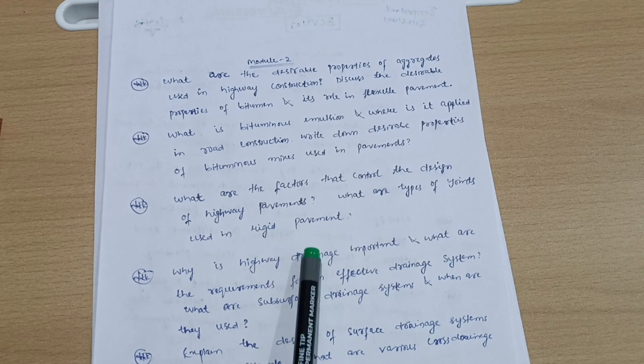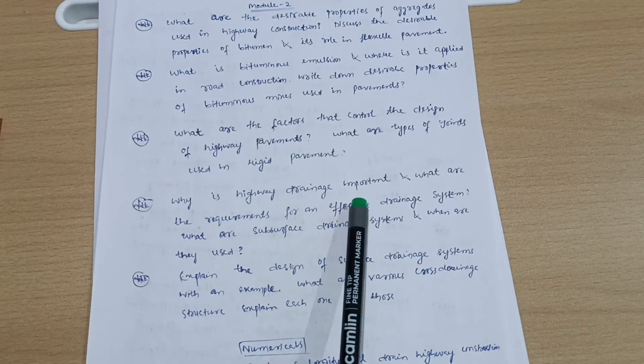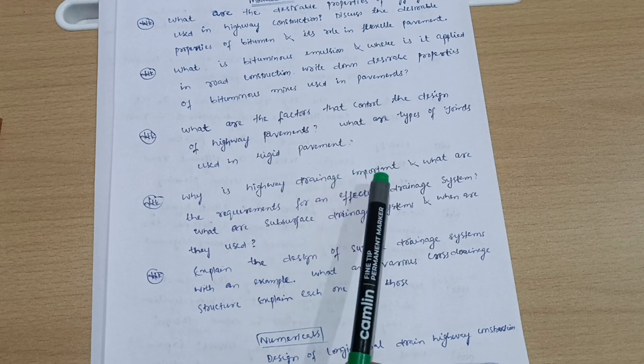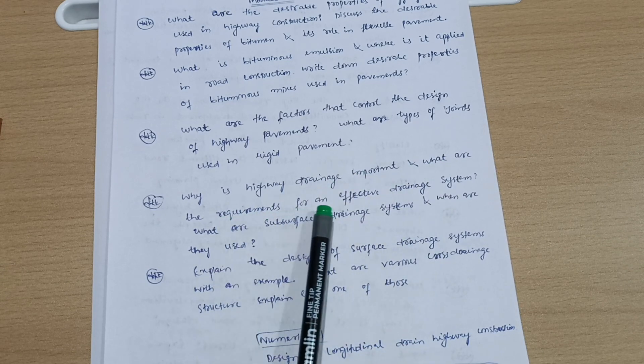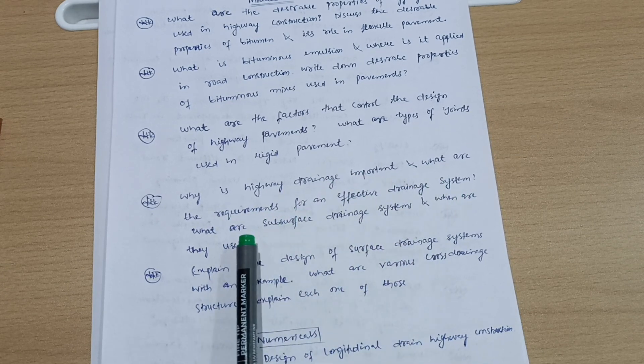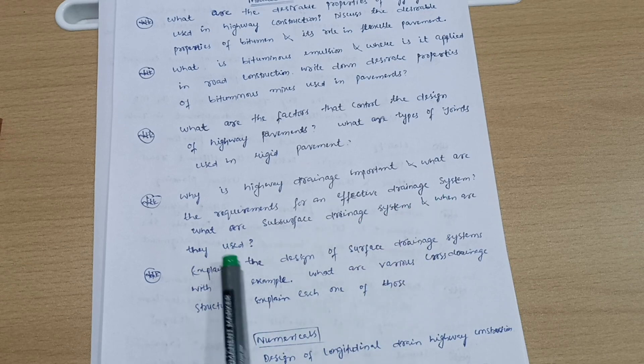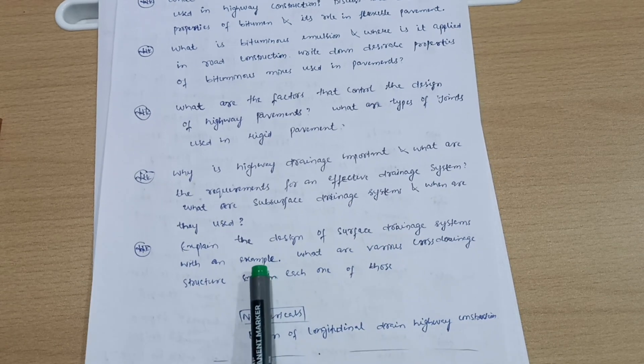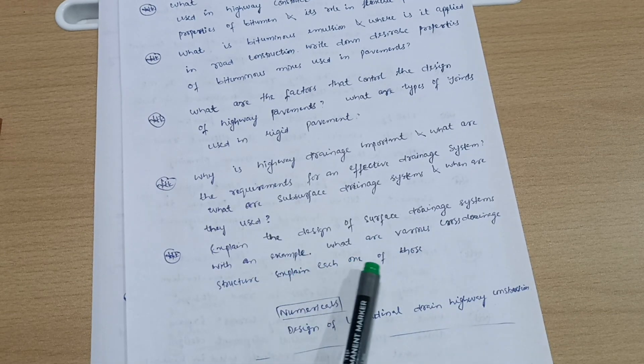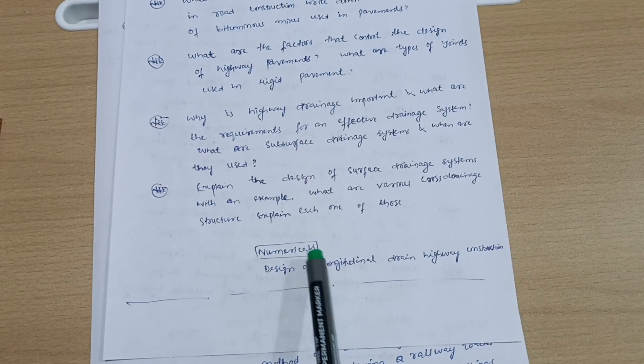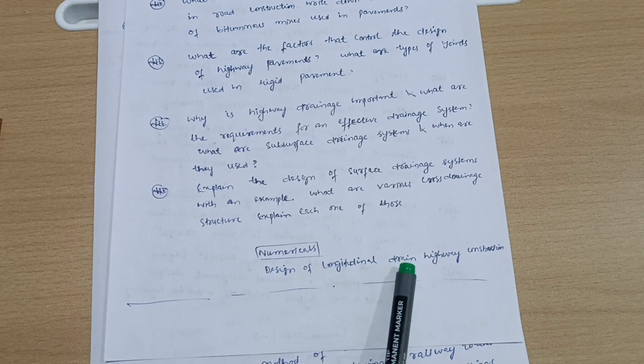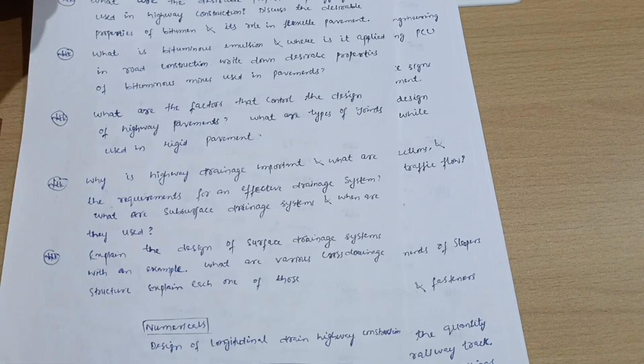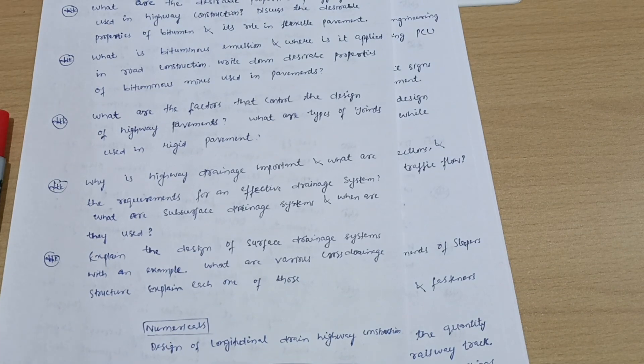What are the factors that control the design of highway pavements? What are the types of joints used in rigid pavement? Why is highway drainage important and what are the requirements for an effective drainage system? What are subsurface drainage systems and when are they used? Explain the design of surface drainage systems with an example. What are various cross drainage structures? Explain each one of those. You have to go through numericals, that is design of longitudinal drain highway construction. Refer the model question paper and whatever notes you are having and whatever notes your professors have provided to you.